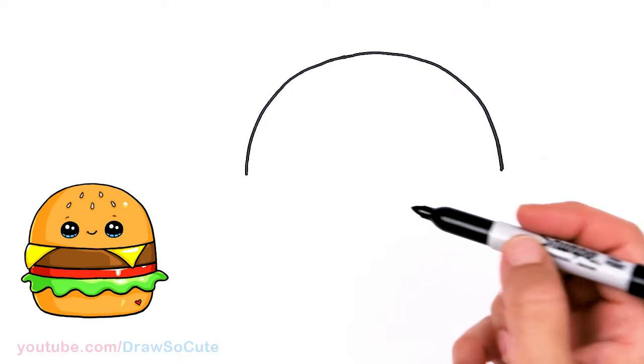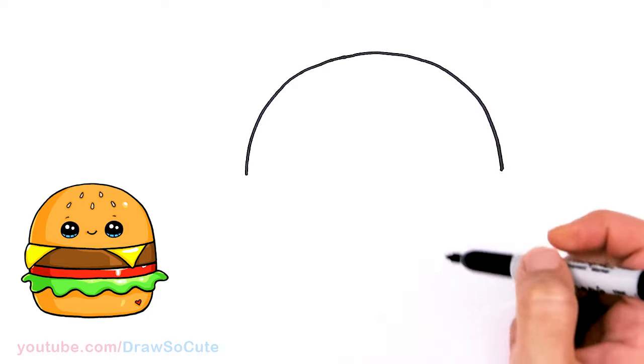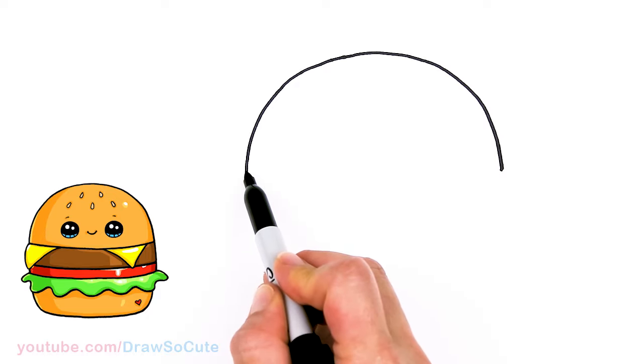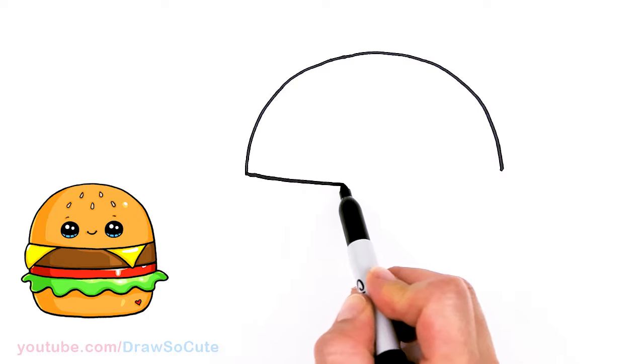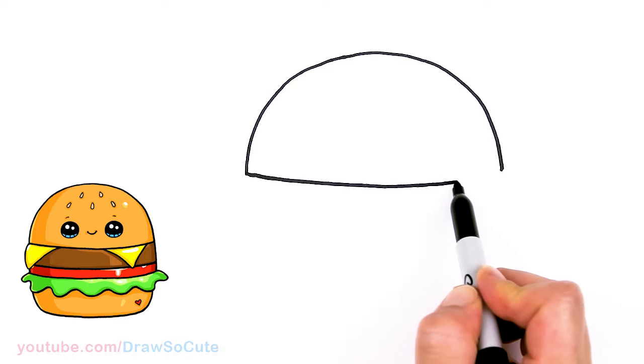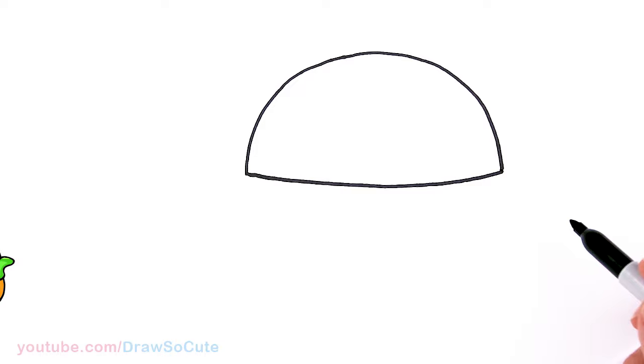Now that I have this big curve in, let's go ahead and connect it with a curve at the bottom. So just a soft curve and back for our top bun.